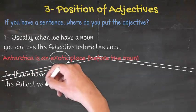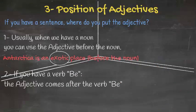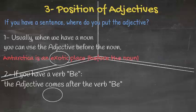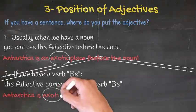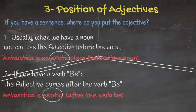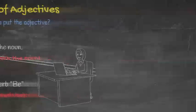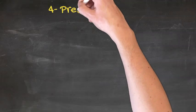Second place, if you have a verb to be, the adjective comes after the verb to be. For example, Antarctica is exotic. It came after the verb to be.